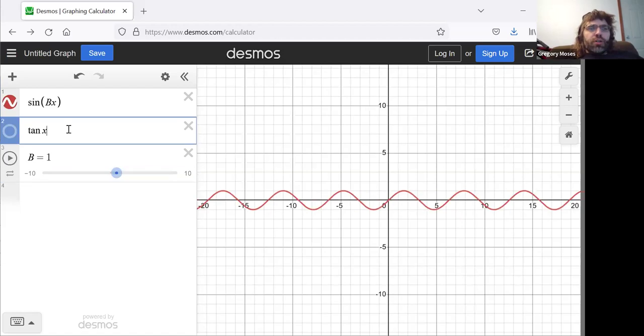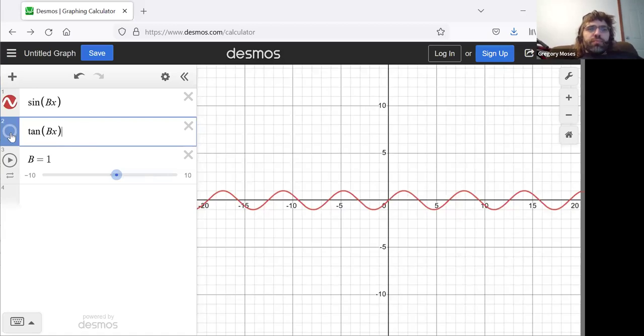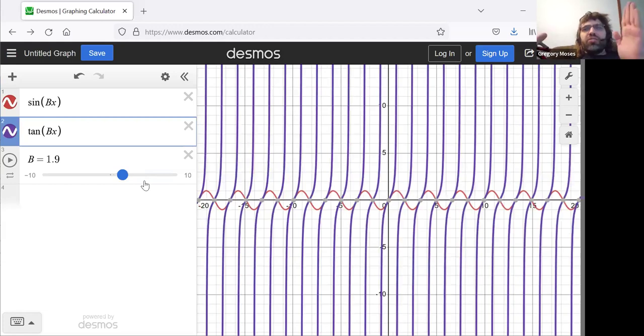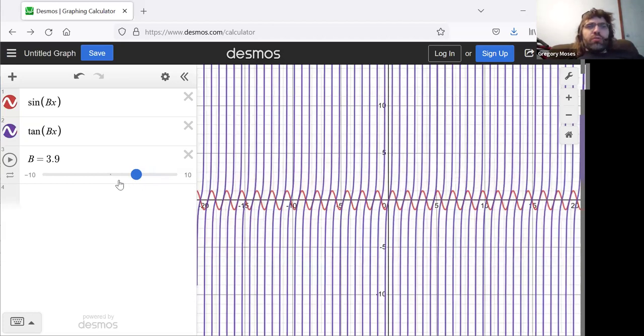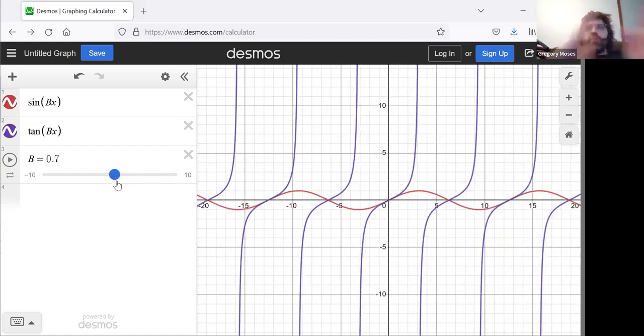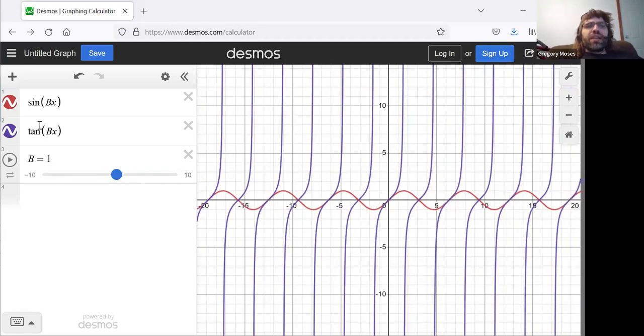So, what about the tangent? Well, precisely the same thing. As b increases, you see these graphs get smushed together. The period is decreasing. If b gets close to zero, you see these curves are pulled apart. The period is increasing. So, we see the same kind of thing with the tangent, once again, that we see with the sine.